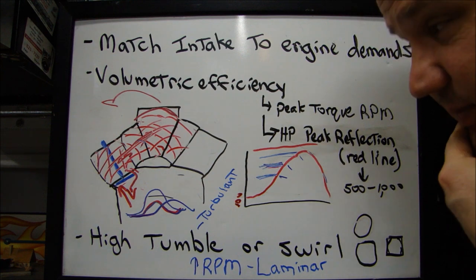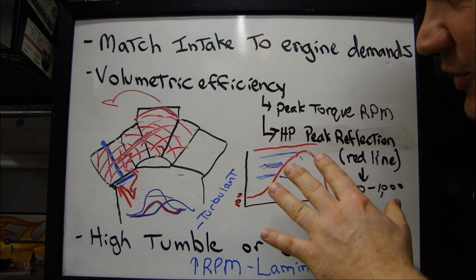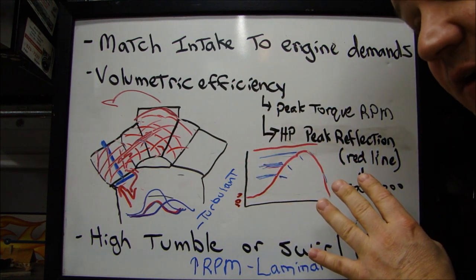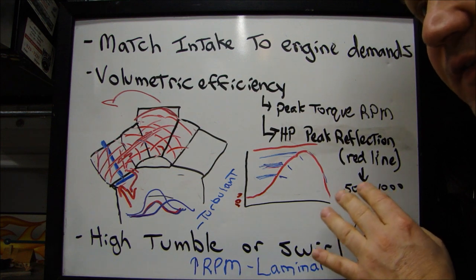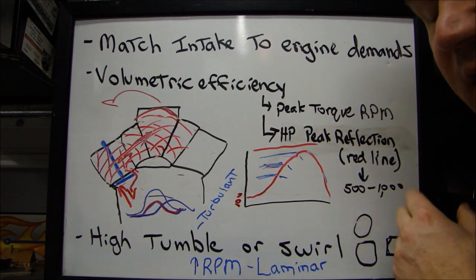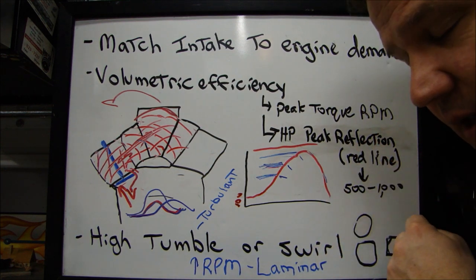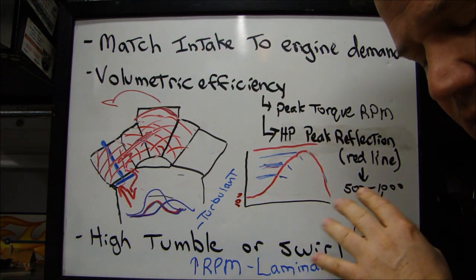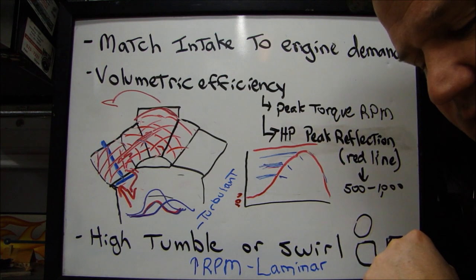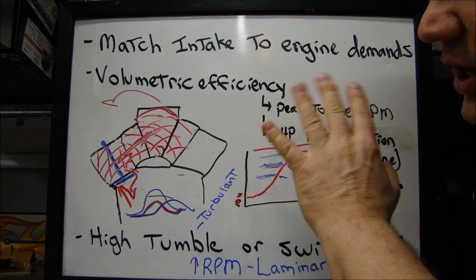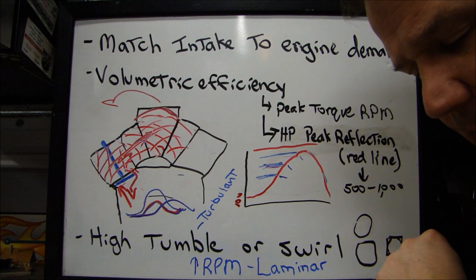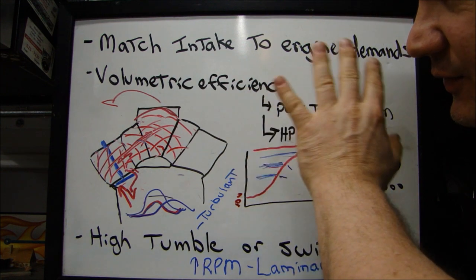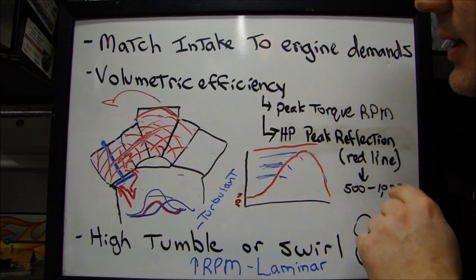Whereas for highly modified high-performance race cars, you want the target peak reflection — the peak reflection of the wave — closer to the red line, or roughly 500 to 1,000 RPM lower than the factory manifold. There are volumetric efficiency calculators online you can look up. You already know what your engine demands are; you look at the intake specs you're going to choose and can match those up.